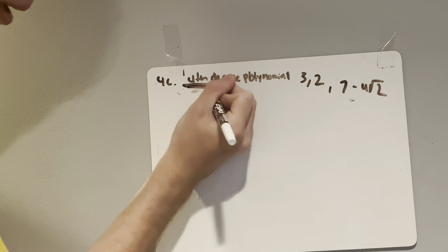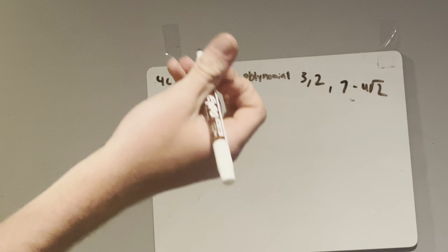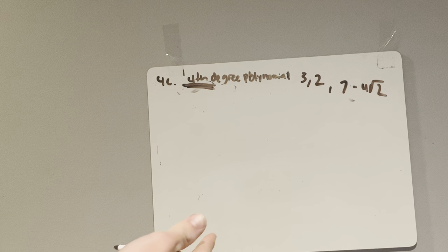As you can see, it's a fourth-degree polynomial but we were only given three roots. This is because there is a fourth root that we are provided with the information of 7 minus 4 radical 2. Whenever you're given a radical or an i as a root, you also have to constitute its opposite.